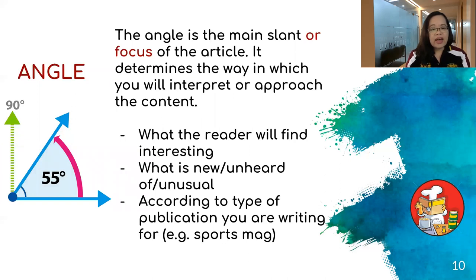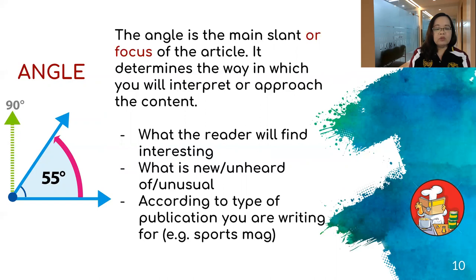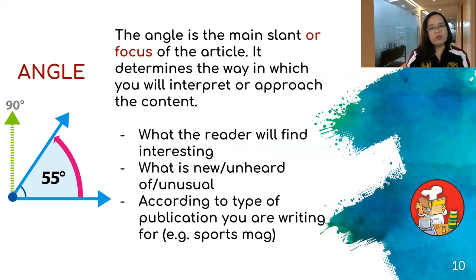The angle is the main slant or focus of the article. It determines the way in which you will interpret or approach the content — what readers will find interesting, what is new, unheard of, or unusual. The angle is normally chosen based on the type of publication you are targeting. If it's a fashion magazine, look for a fashion angle; if it's a health magazine, look for a health angle. The angle is very much related to the type of audience and what they search for in the publication.